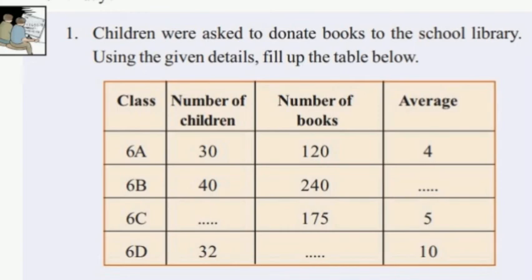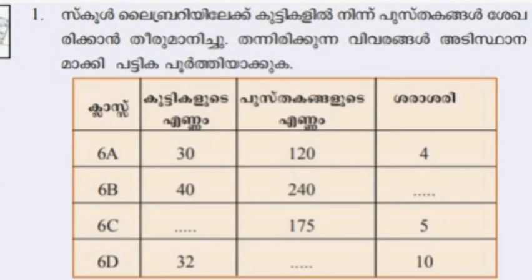This is the next question. Children were asked to donate books to a school library. Using the given details, fill up the table. We have columns for number of children and number of books. We will fill them in. For class 6A, number of children is 30, number of books is 120.